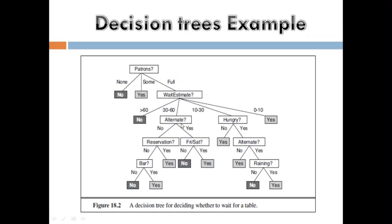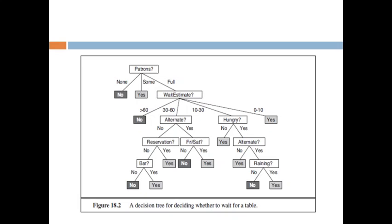If waiting time is 10 to 30 minutes and you are hungry, you will choose an alternate. If the alternate does not exist, you will wait. If an alternate exists but it is raining outside, there is no chance — you definitely have to wait. For the alternate option, check reservation: if reservation is yes, you wait; if reservation is no, you choose alternate like bar conditions. If alternate is yes and it is Friday or Saturday, you will wait. If it is not Friday or Saturday — other weekdays — the answer is no.